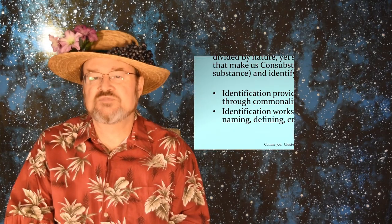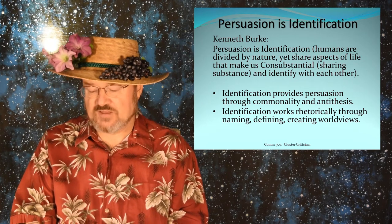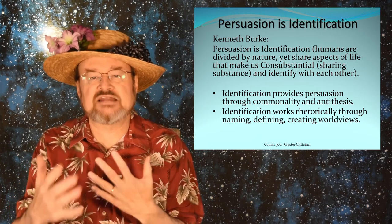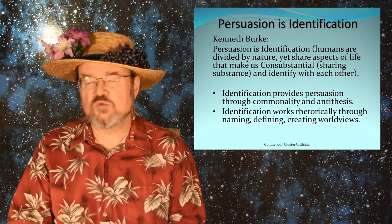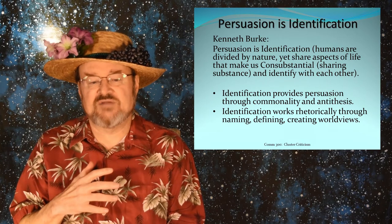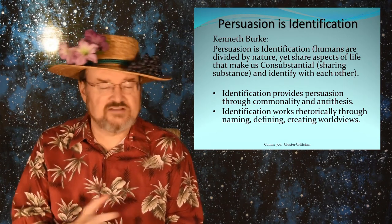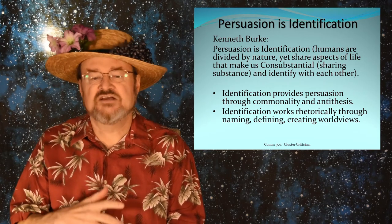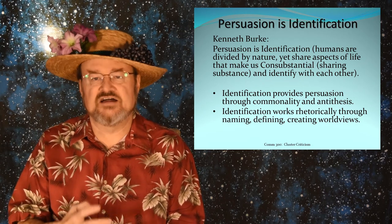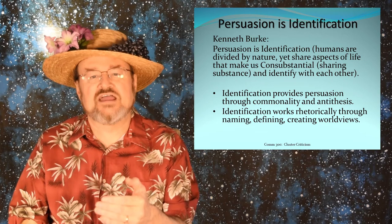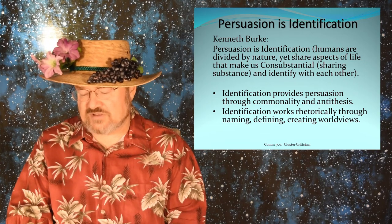What's important about Kenneth Burke regarding identification and terministic screens? For Burke, persuasion is identification. As animals that share physical bodies, we're separated by nature — we're not the same person, so we're different. But as a result of that, we also share certain similar aspects. For example, I might identify with you by sharing that I used to turn my papers in late, or that my GPA wasn't that high when I graduated. Or I might share something about George Mason — go Patriots, how's our team doing? In that instance, those are areas that make us consubstantial. We're sharing substance, and that's what Burke essentially is talking about.